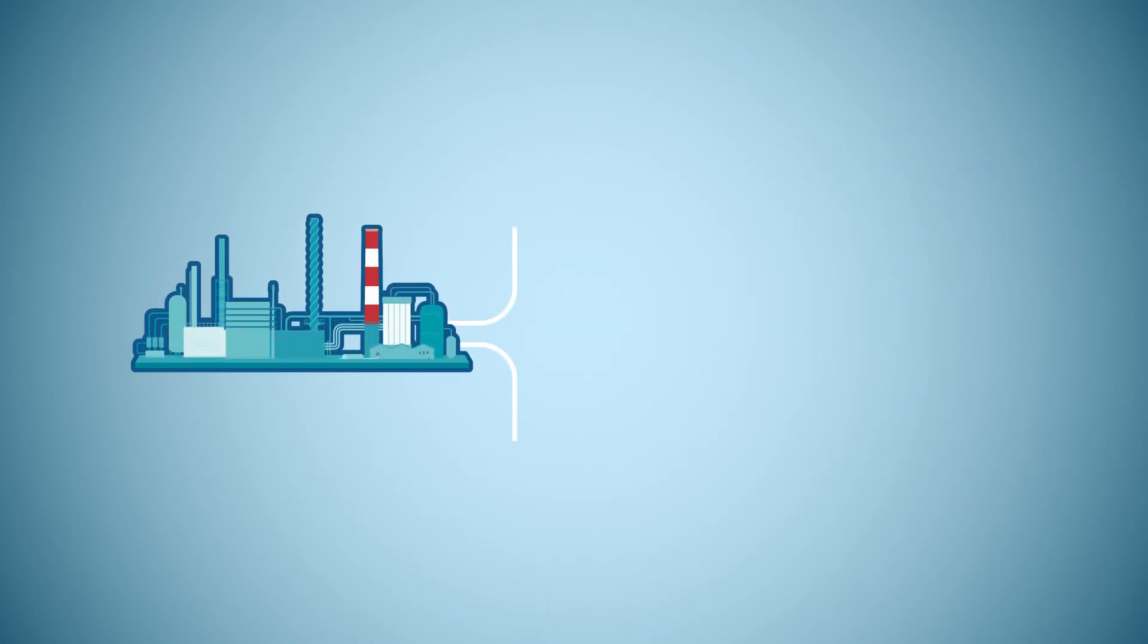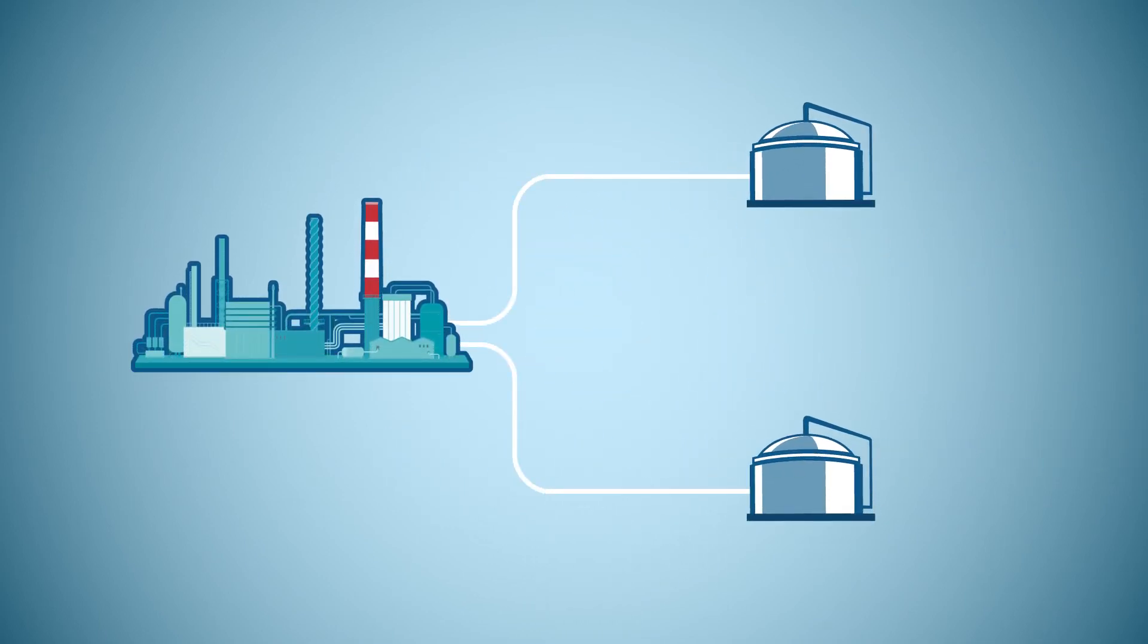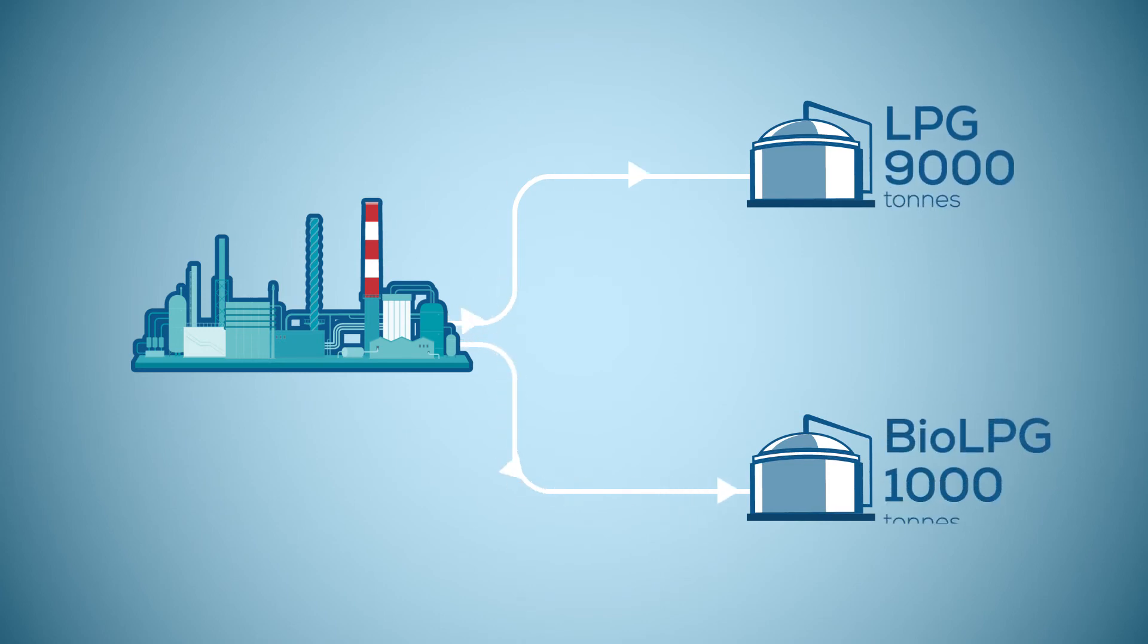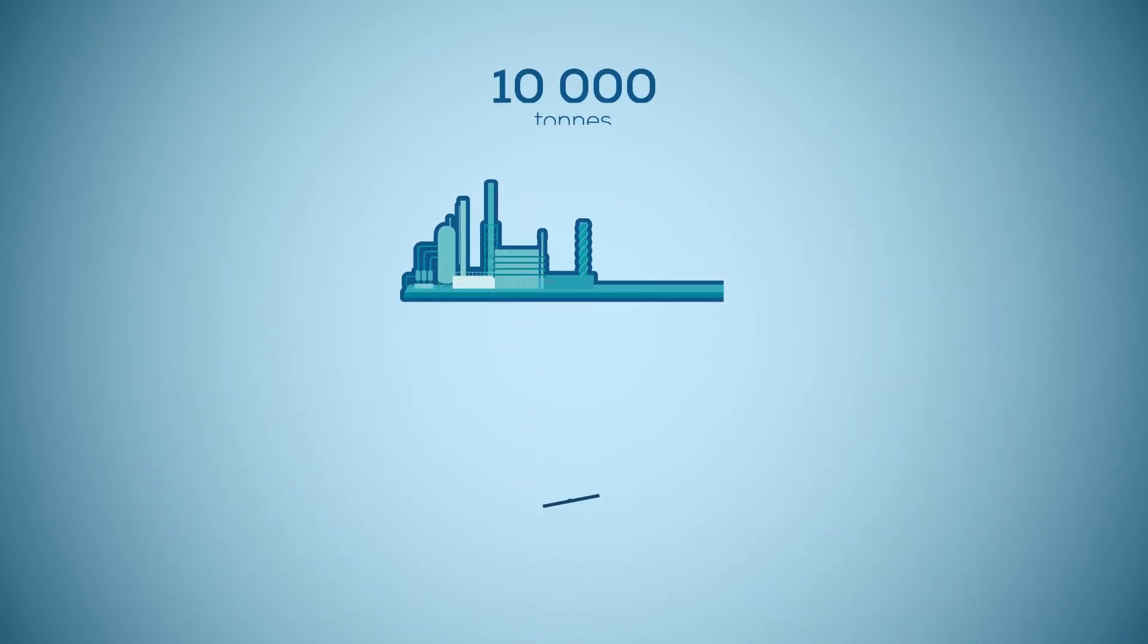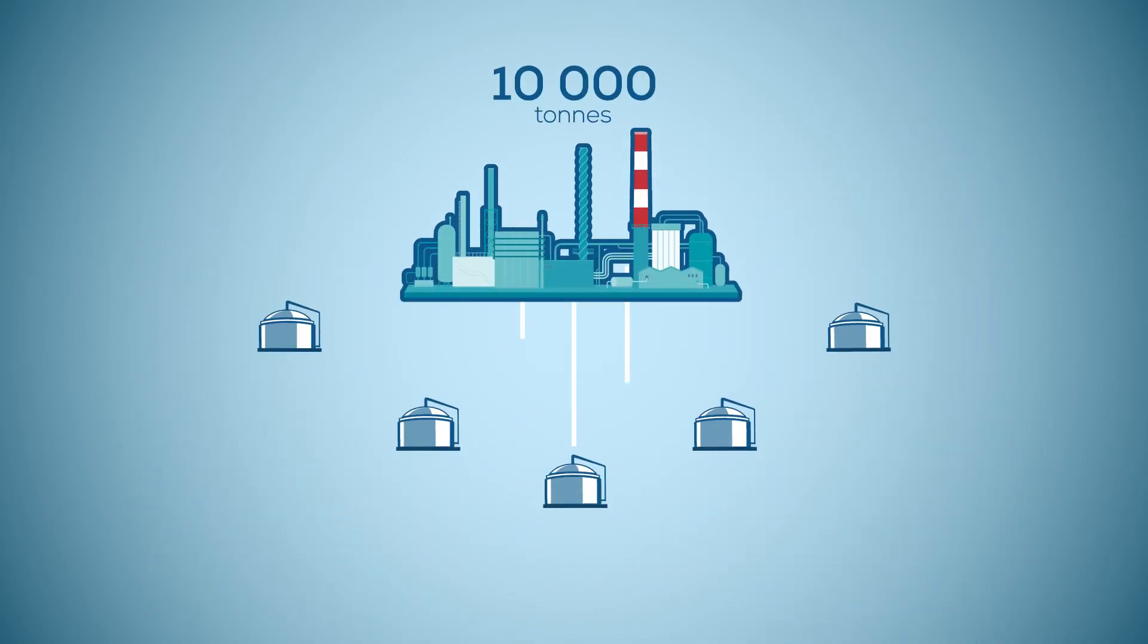Let's take a concrete example. Imagine we produce 9,000 tonnes of conventional LPG and 1,000 tonnes of Bio-LPG. So, the 10,000 tonnes get distributed into five regional storage facilities, each receiving 2,000 tonnes, 200 of which are Bio-LPG.